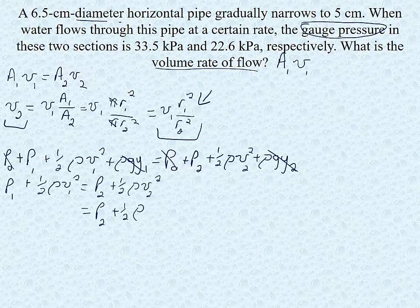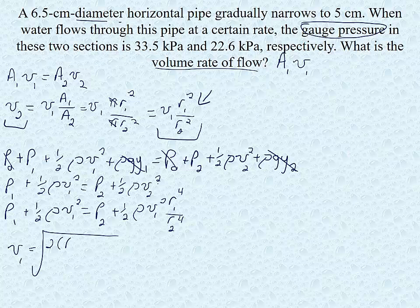P2 plus one half rho v1 squared r1 to the 4th over r2 to the 4th. And it's to the 4th because we have to square our v. So this looks like a pretty ugly equation here. But if we continue to simplify it and we combine terms and find v1, we end up with finding that v1 is the square root of 2 times p1 minus p2 over rho times r1 to the 4th over r2 to the 4th minus 1. This is what our v1 is.